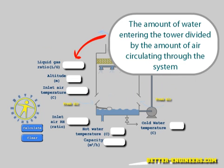Liquid to gas ratio: this value is basically the amount of water entering the tower divided by the amount of air circulating through the system, both expressed as mass flow rate.